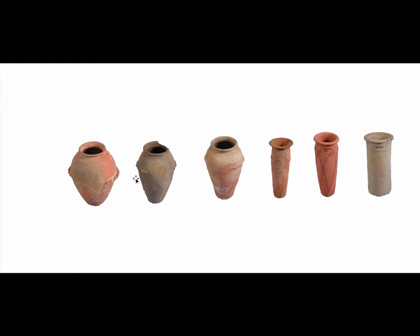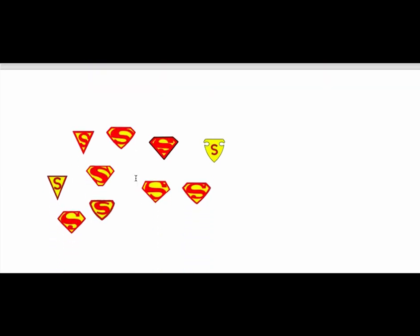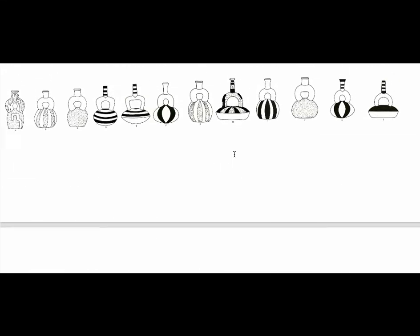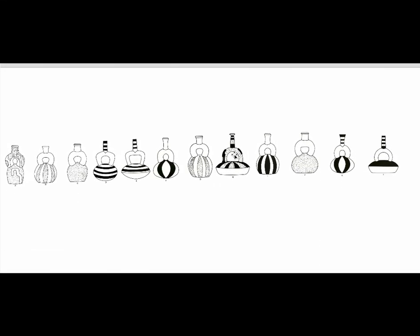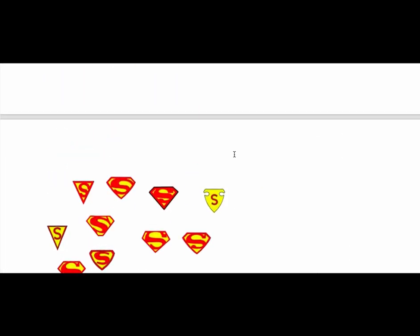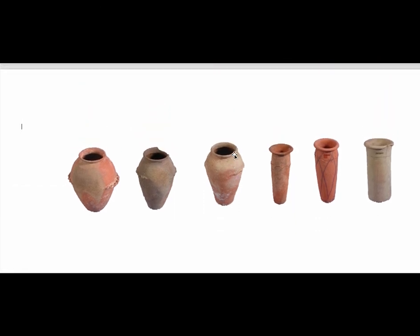So Flinders Petrie pioneered this. Now I want you to actually try a couple of other problems: try to put the Superman logos into order, try to put these vessels into order based on style, and try to put these rims of this pot in order. I'm not going to grade you based on how close you get to the answer — try to get as close as you can, but you'll be learning from it, and we'll go over it next time so you can see how close you got.